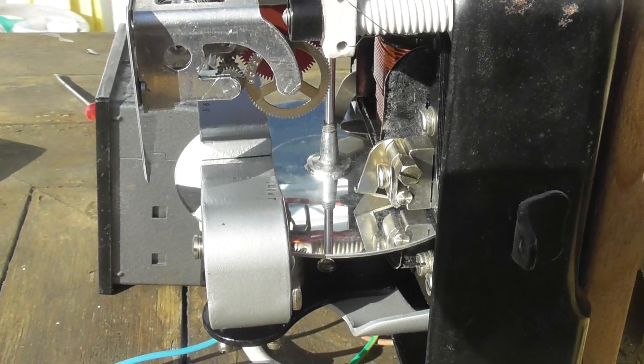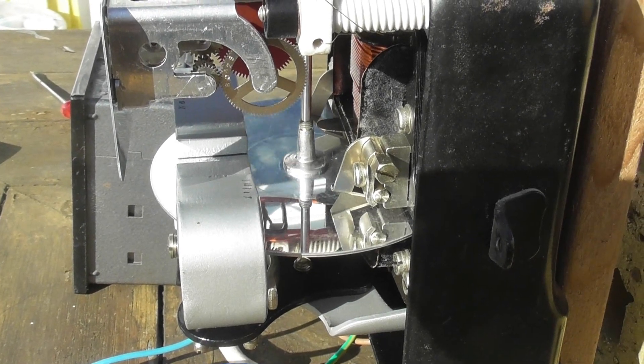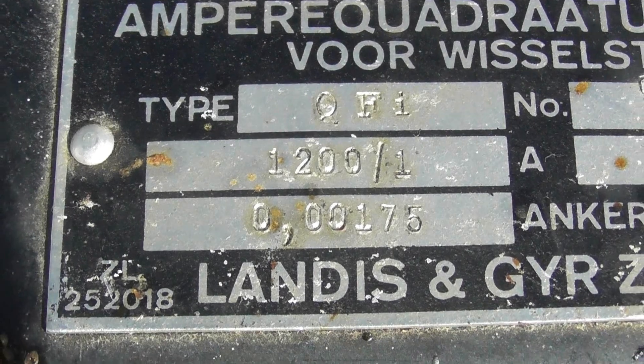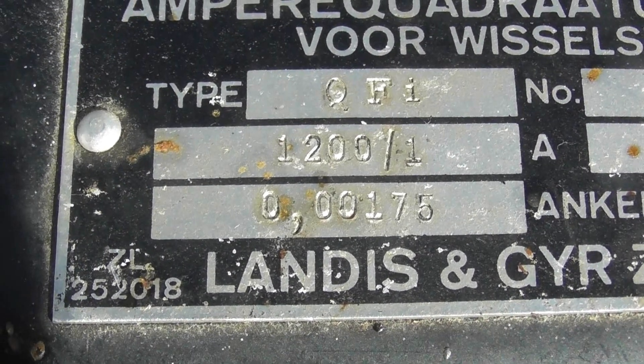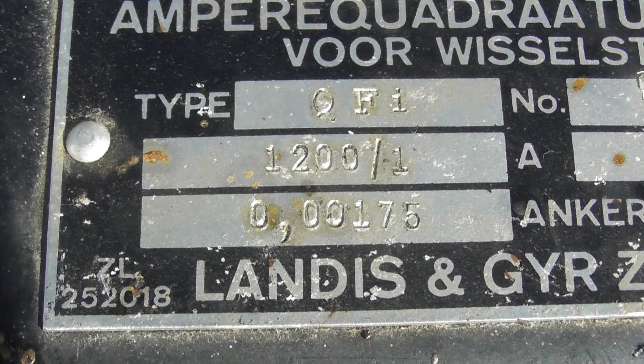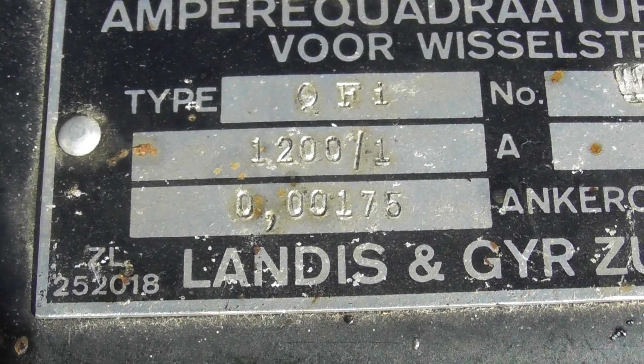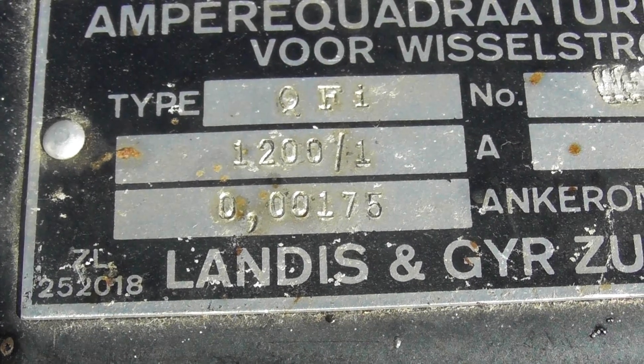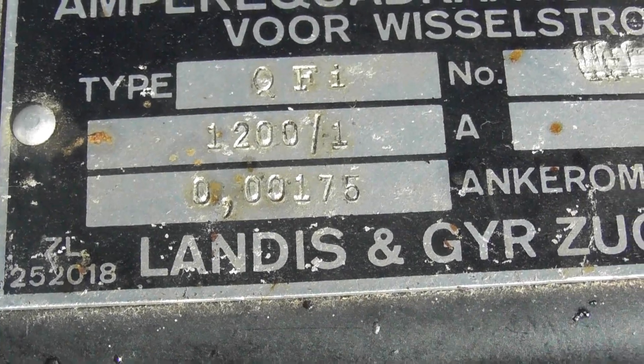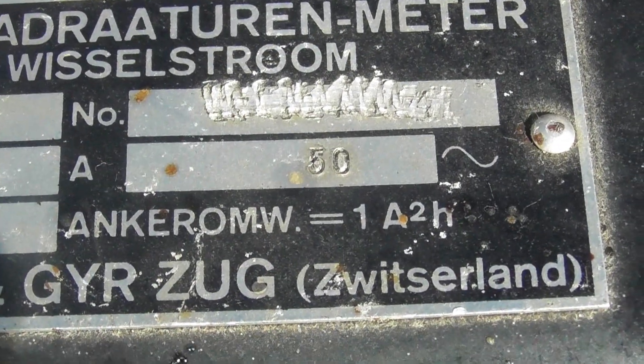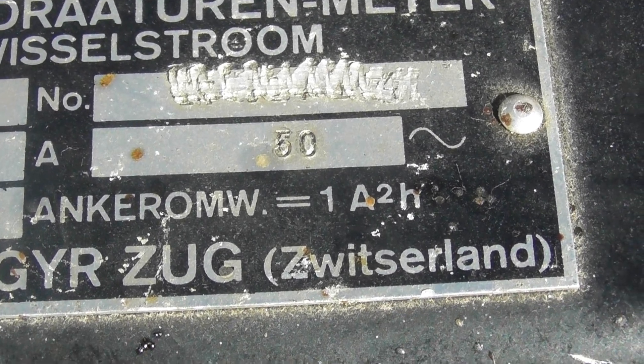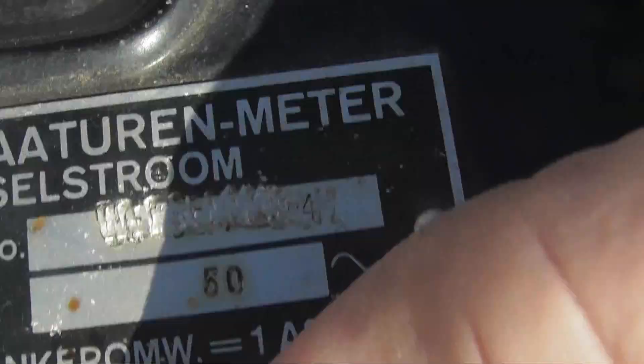This is a new collector, so I've missed one of the older videos. Press up on the nameplate, so the meter type is in QFI. 1200 to 1 ampere. Constant is 0.00175. Rotation is 1 amp square hour. The number is crossed out, 50 Hz. The silly part is the number is crossed out, but there is still a serial number.